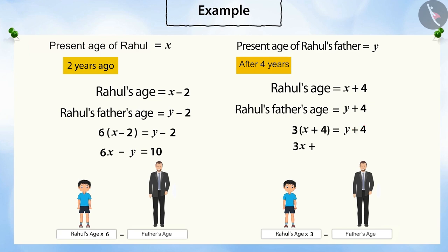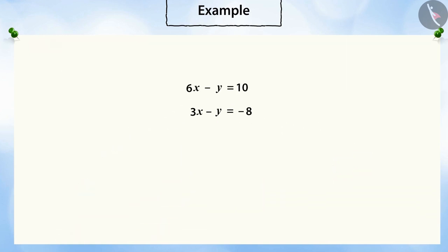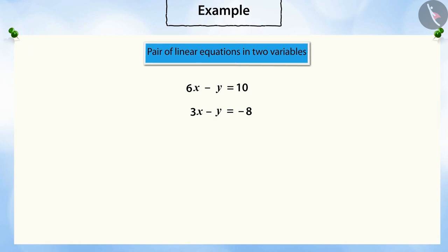That is, 3X plus 12 equals Y plus 4. Moving Y to the left, 3X minus Y equals 4 minus 12. Therefore, 3X minus Y equals negative 8. This is a linear equation. Thus, we get a pair of two linear equations in two variables: the first is 6X minus Y equal to 10, and the other is 3X minus Y equals negative 8.